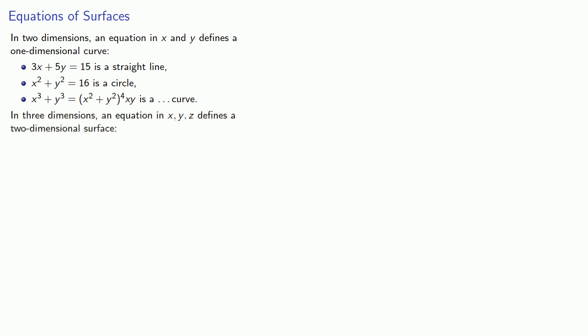Now, if we go up to three dimensions, an equation in x, y, and z is going to define a two-dimensional surface. And we've seen a couple of these. z equals x squared plus y squared is a paraboloid. z squared equals x squared plus y squared is a cone. z cubed plus x squared y squared plus 8xy equals 100 is a surface of some sort.